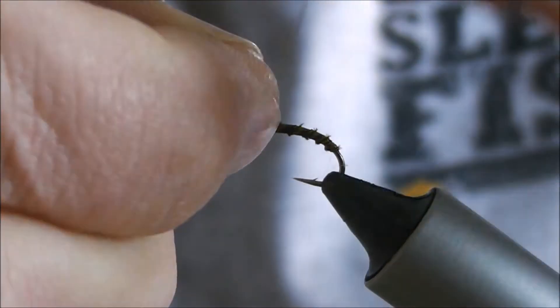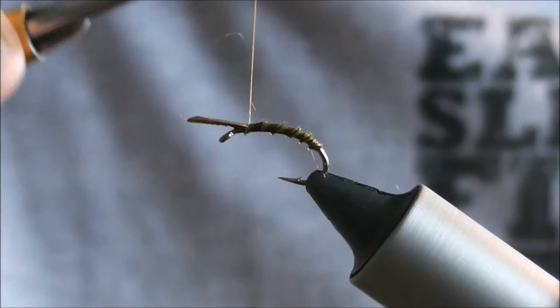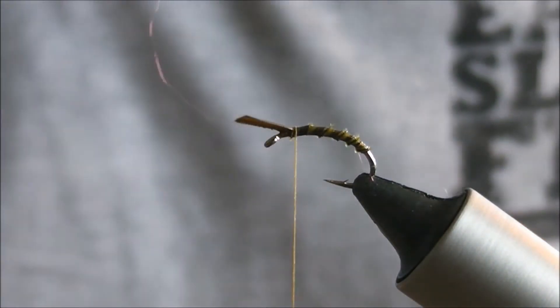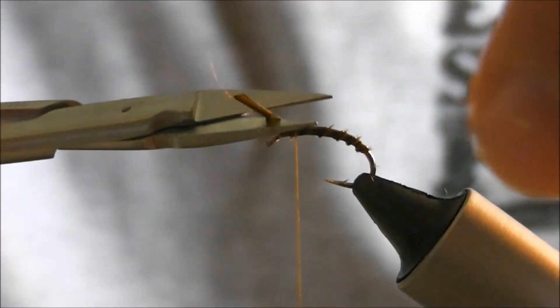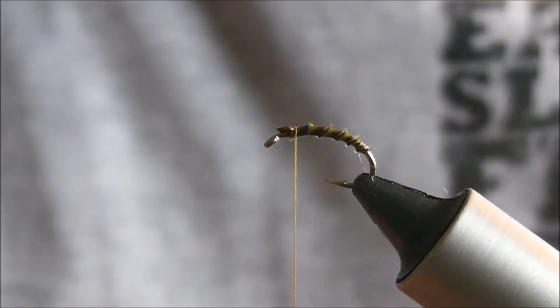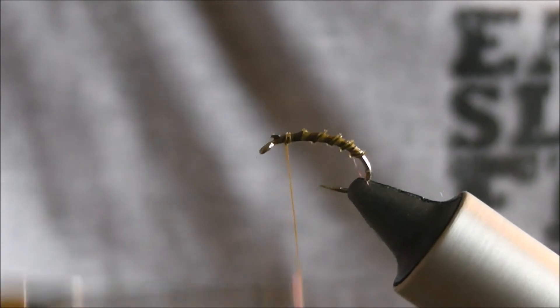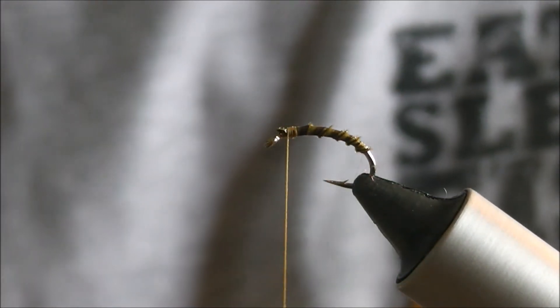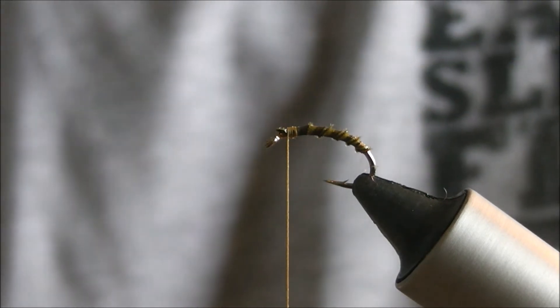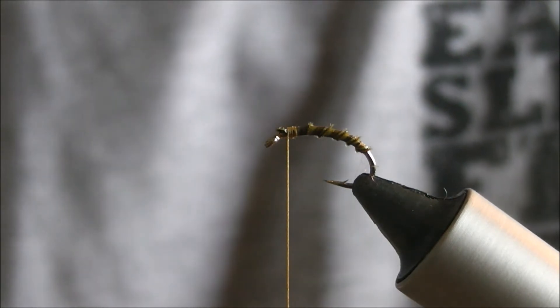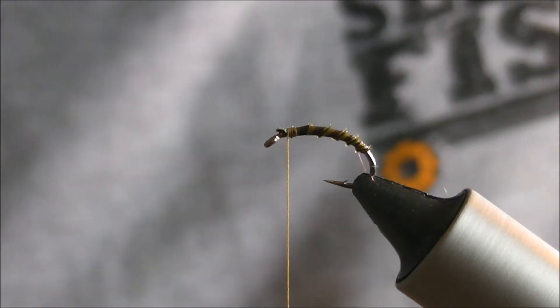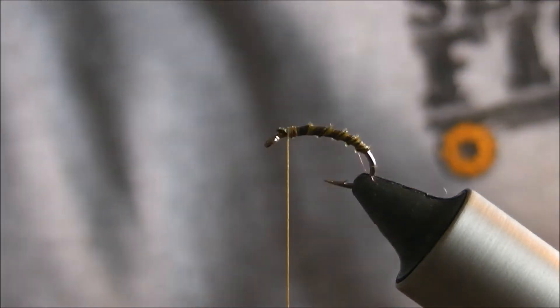It's kind of the good thing about turkey biot. And then just catch it down with one turn, trim that piece off. So we've got our body simple. Now you could stick a couple of orange goose biots either side of that and that'd be a subsurface buzzer. We are going to use orange flexi floss, so we're going to trim off a piece.